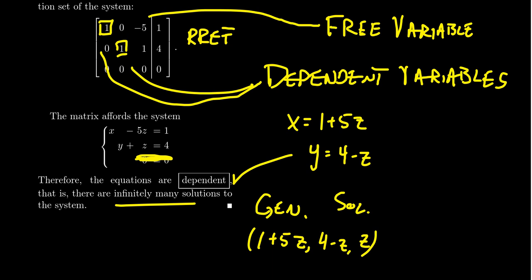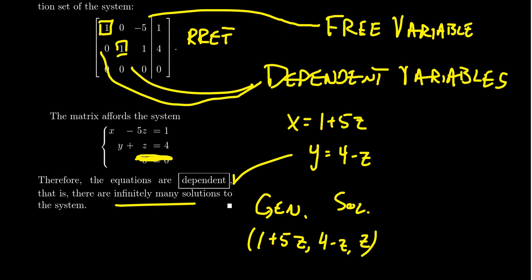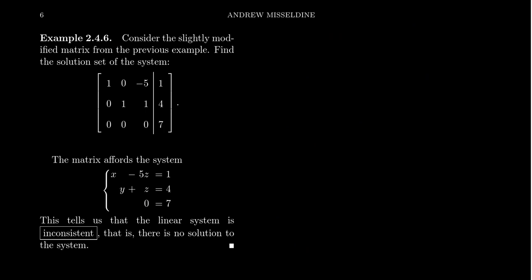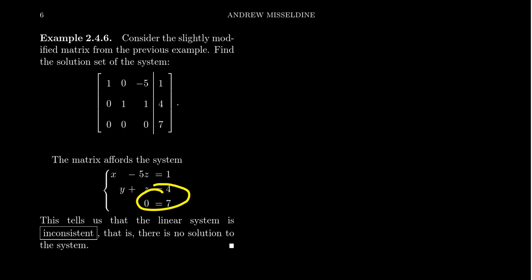Since the matrix is in RREF, the system of equations is already solved, and we can describe the general solution in the dependent case very nicely. Now, what about the inconsistent case? Consider a matrix identical to the previous one, except the last row's augmented entry is changed from 0 to 7. The first two equations remain x − 5z = 1 and y + z = 4, but the last equation becomes 0 = 7, which is a contradiction. No assignment of variables can make 0 equal 7, so this system has no solution — it is inconsistent.